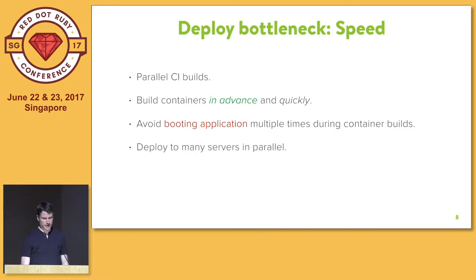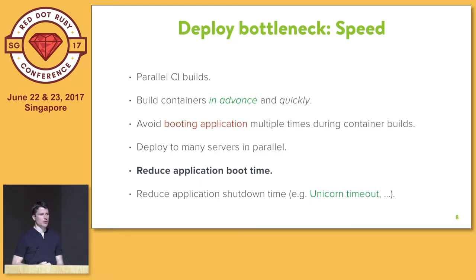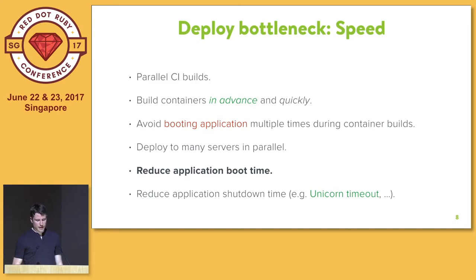Deploy to many servers in parallel — you don't want to do one server at a time with an application this size. If you look at all those different steps — building containers, running tests, building the production container, restarting the applications — all of those require booting the application. So if you find a way to reduce the time it takes to boot your application, that has a huge impact in many different areas. And one often overlooked factor is how long it takes to shut down your application. If you're running Unicorn, there's a timeout for how long a request is allowed to run. You either have to terminate those requests, leading to errors, or wait for them to finish. Minimizing long-running requests has a huge impact on deploy speed.